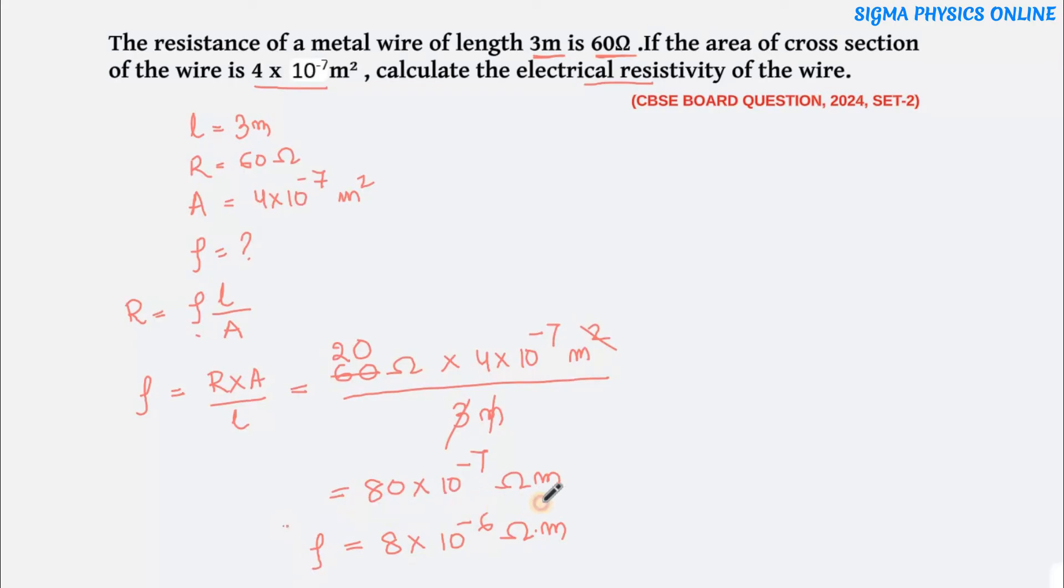So, the resistivity of this wire is 8 into 10 to the power minus 6 ohm meter. This should be your answer.